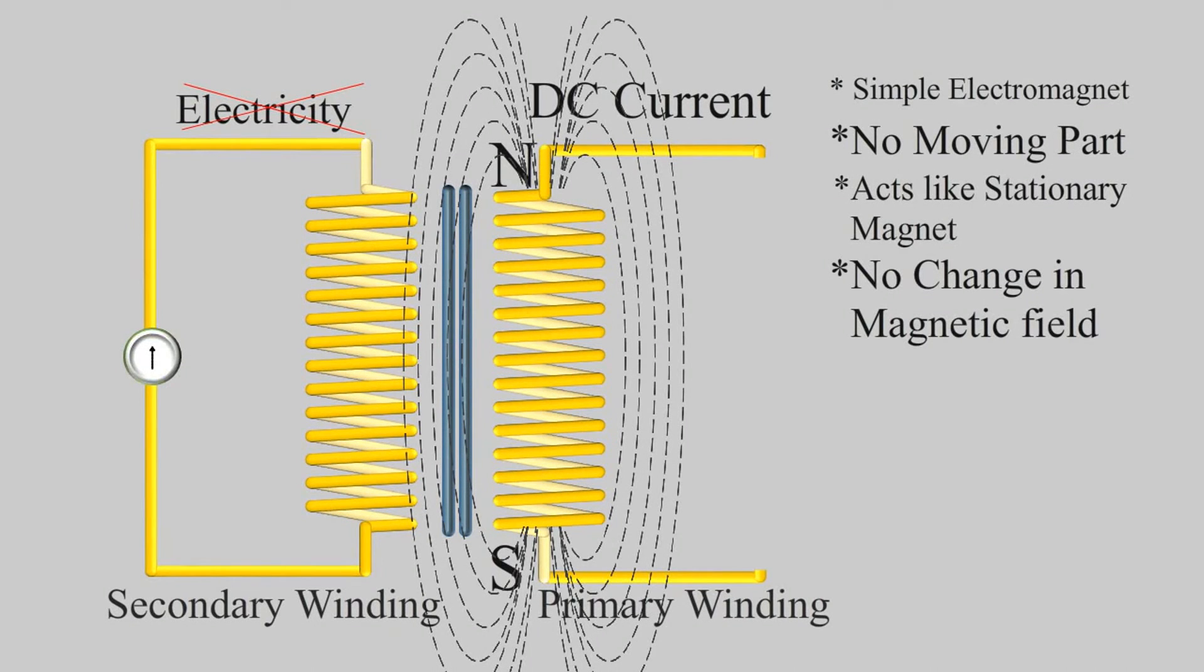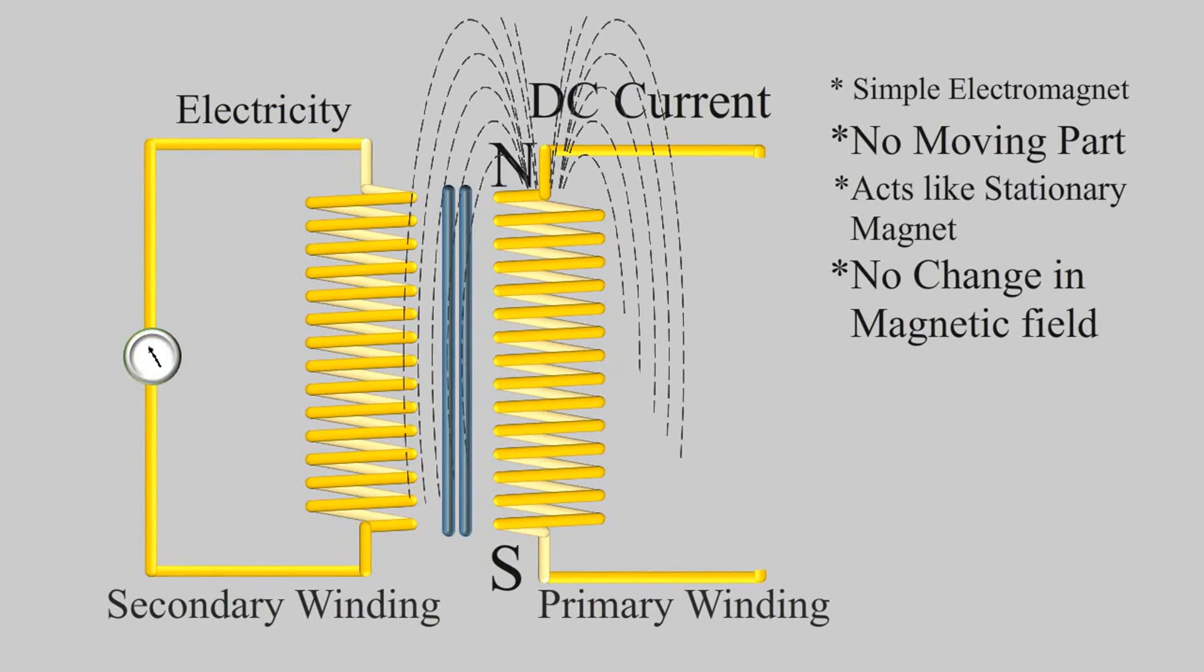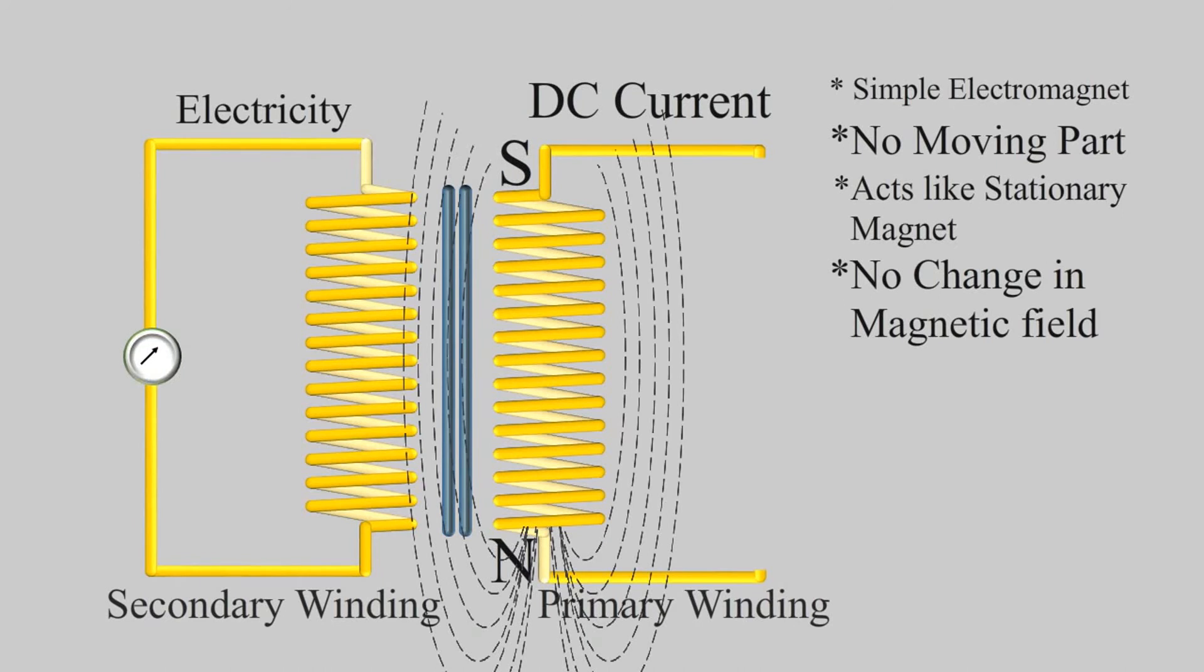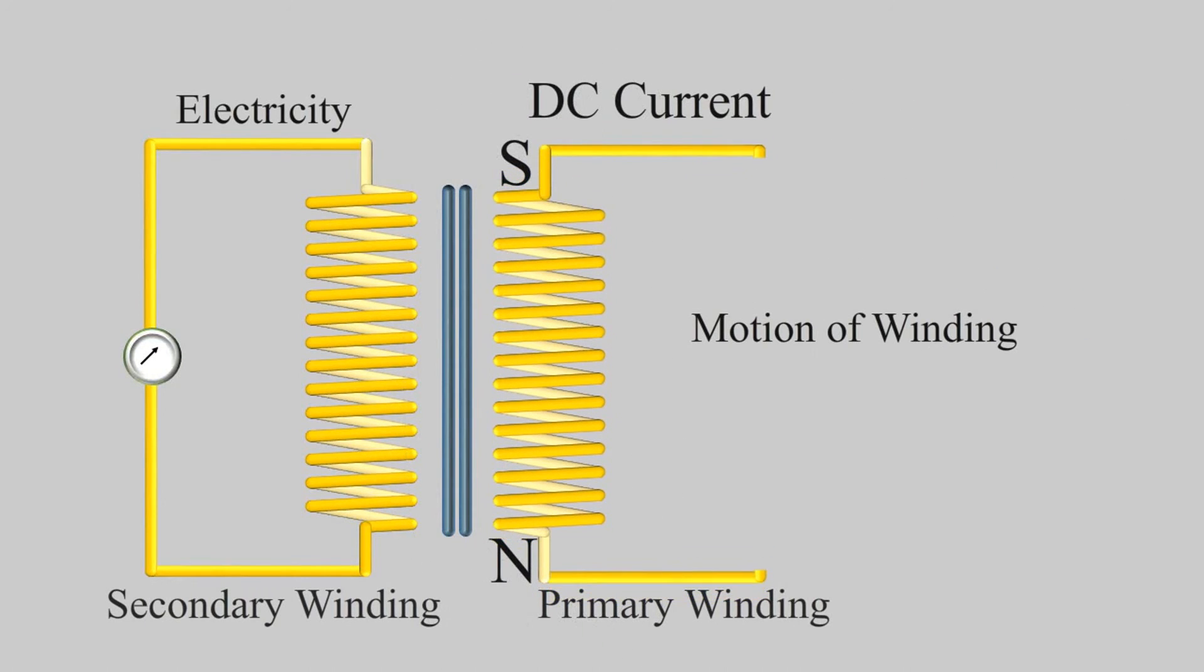Now to make that happen you have to continuously keep changing the magnetic field. But motion of primary winding to do so is not possible. But we are smart enough to find a solution for it. And that's changing the direction of flow of current continuously in primary winding.